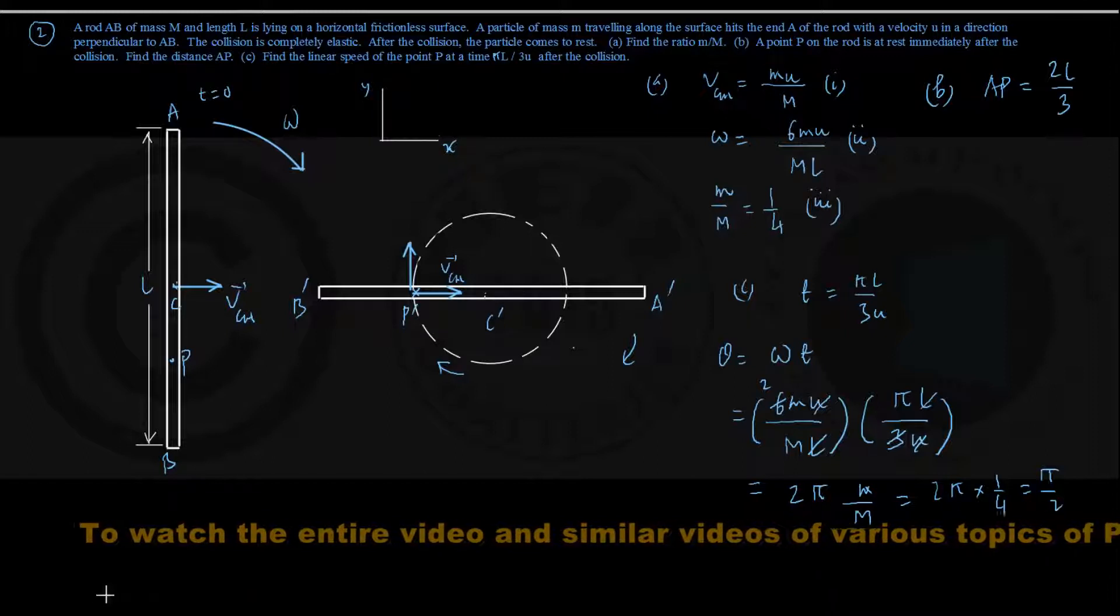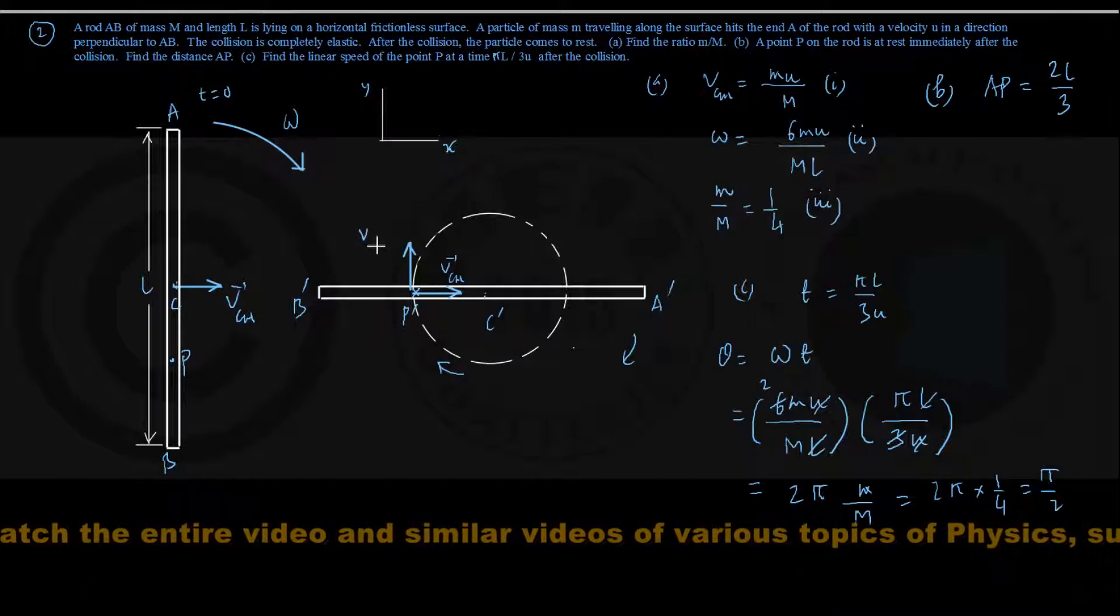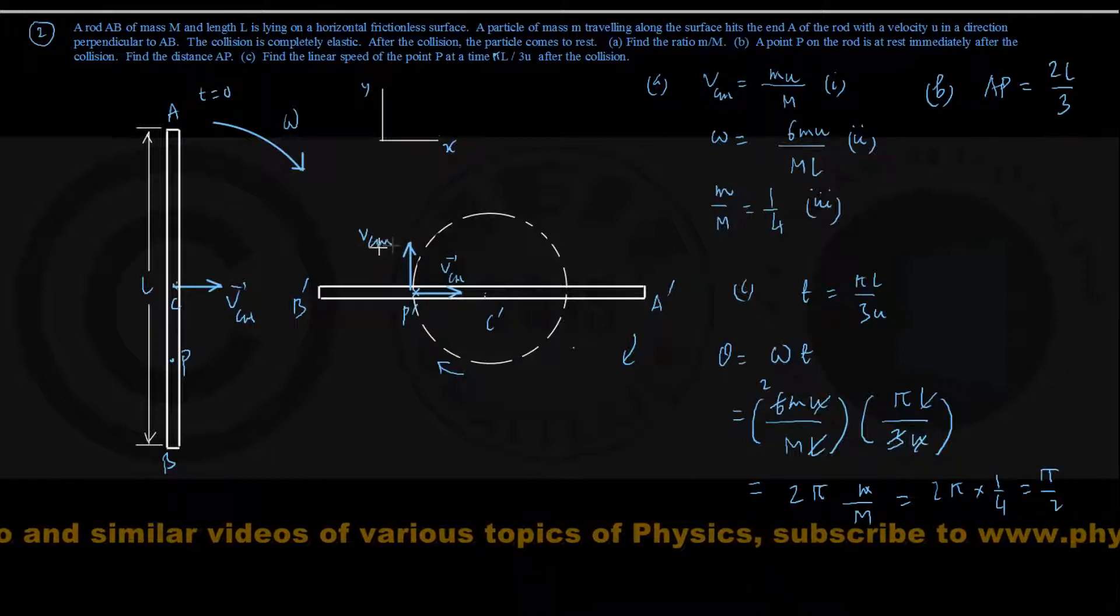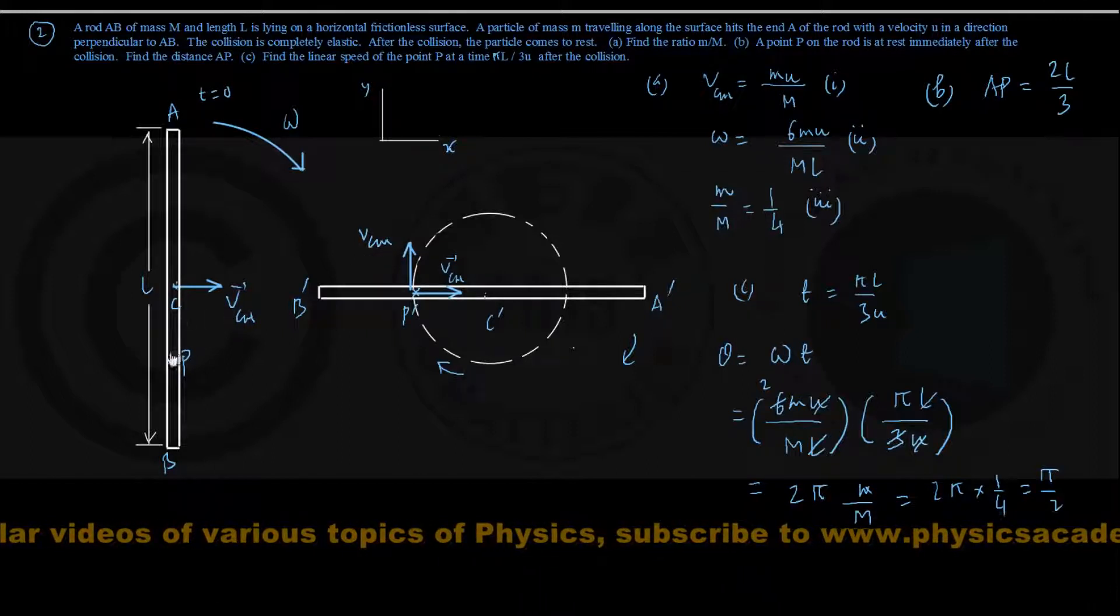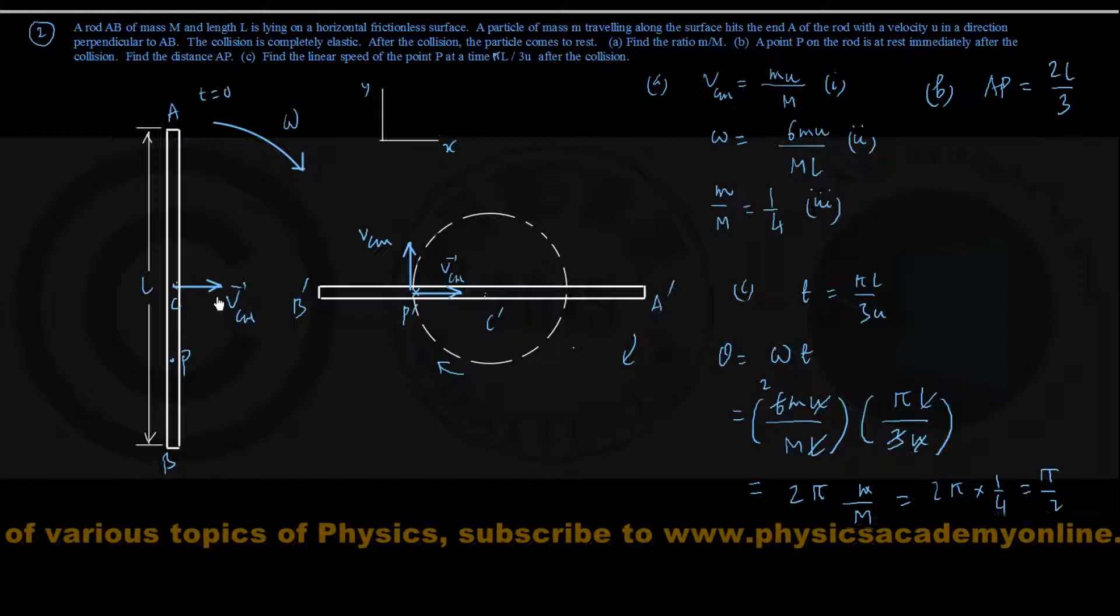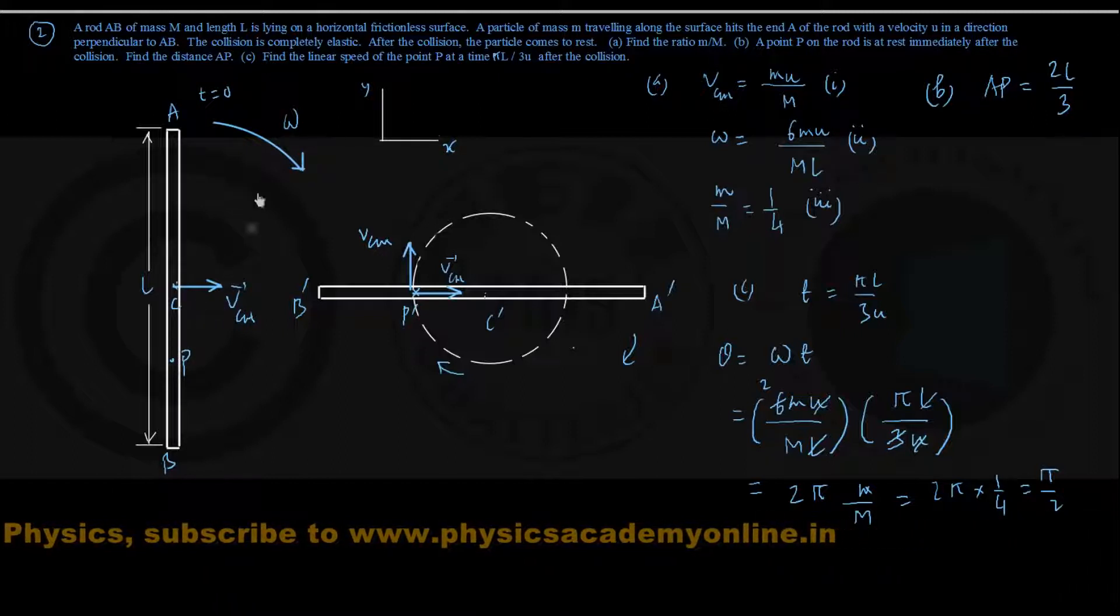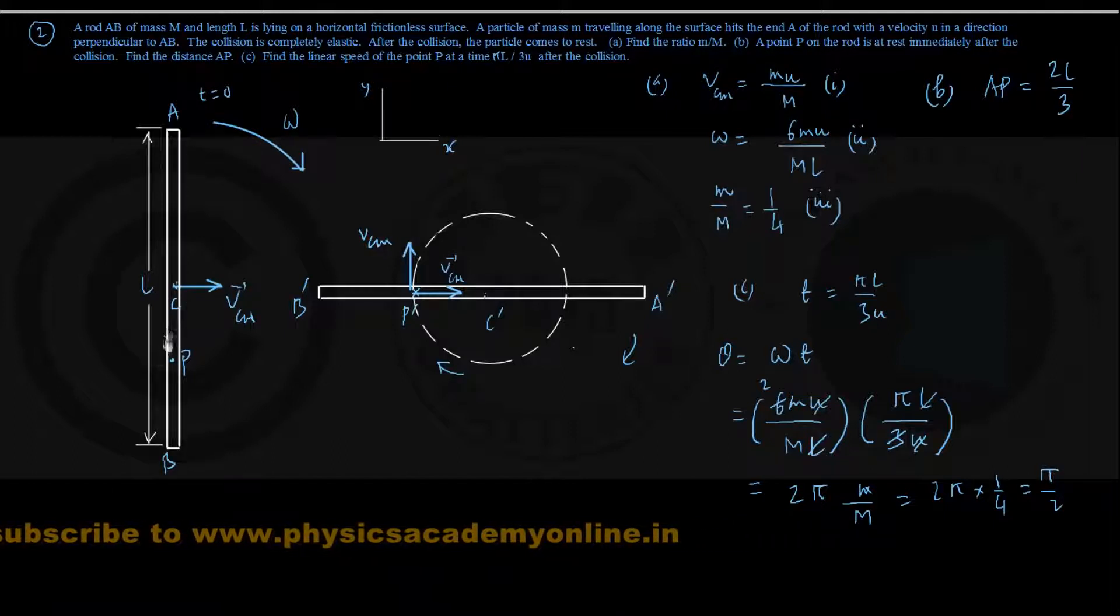So this velocity also has a magnitude equal to VCM only. In part B, we have found location of P such that in magnitude VCM and the velocity due to this rotational motion, they have the same magnitude.